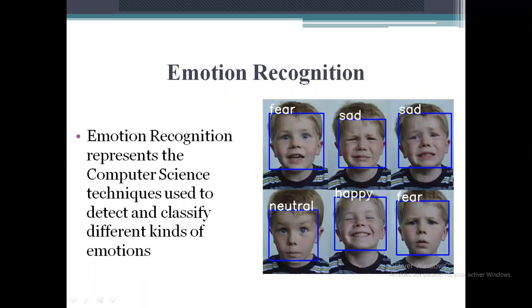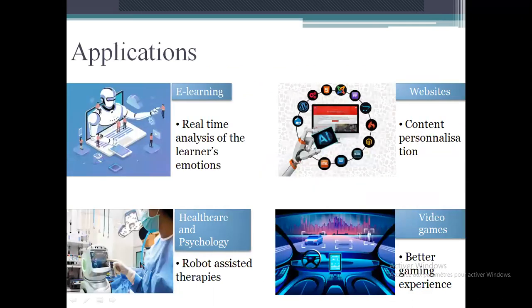Emotion recognition is all of the computer science techniques used to detect and classify the different kinds of emotions. It is used in many different areas such as e-learning for the analysis of learner's emotions but also in websites for content personalization. It is also used in healthcare and psychology. Recently robot assisted therapies were developed and tested with users, especially children. And it is used in video games for better gaming experiences.